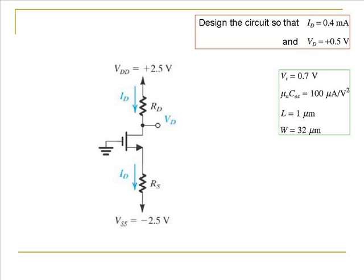In this problem, we are asked to design the circuit so that a specified value of the drain current and a specified value of the drain voltage is reached. What we mean by designing the circuit is essentially calculating the drain resistance and the source resistance. The values of the constants are given.